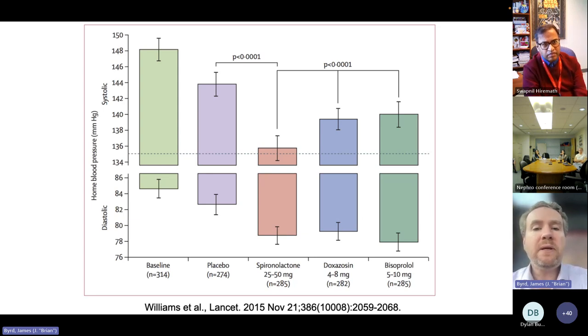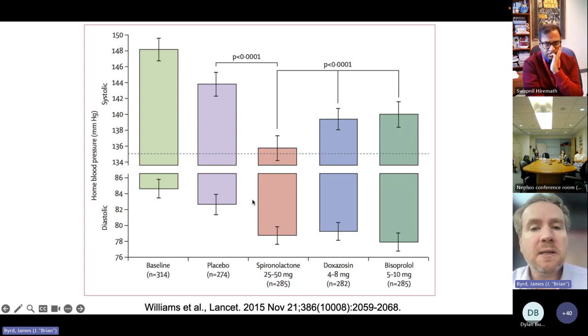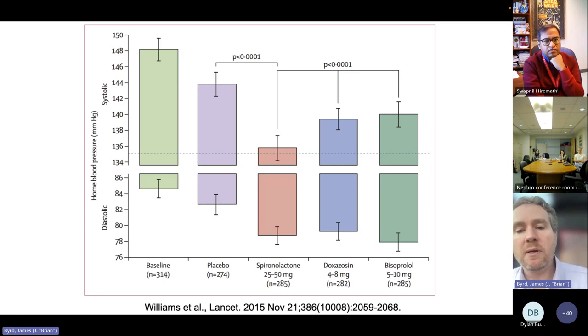These are patients with treatment-resistant hypertension. The question was, which add-on fourth drug would lower the blood pressure the best? They used home blood pressure. What we can see here is the upper box is the systolic blood pressure. The lower box is the diastolic blood pressure. At baseline, measurements were made at home. During placebo, there was no washout period, but these medications were given in random order. There was a placebo effect. Spironolactone caused the greatest and the most consistent reduction in systolic blood pressure compared with doxazosin or bisoprolol.